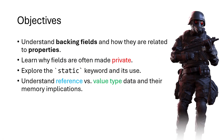What are our objectives here? We have Hunk from Resident Evil to help us explain. We want to understand what a backing field is and how they relate to properties, why we would sometimes make a field private instead of public, what the static keyword means and how we use that, and we also want to understand reference type data and value type data and the differences between those things specifically with how they relate to memory.